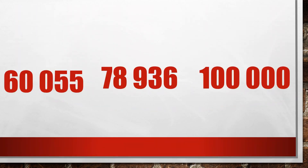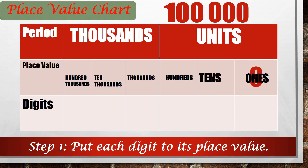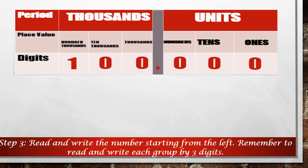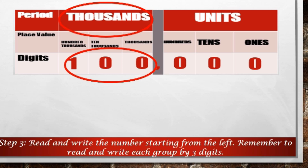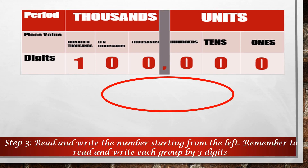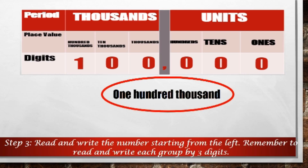Let's move on to the third number. We put each digit in its place value. Then we separate groups of numbers using commas. Starting from the left, we have 100 in the thousands group and 0 in the units group. So we can read and write it as simply 100,000.